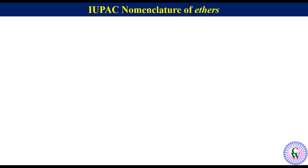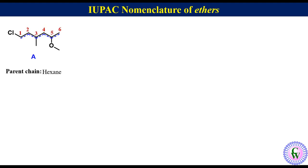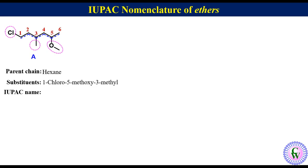A few more examples. Compound A: the parent chain is a six-carbon chain called hexane, numbered one through six. There are three substituents: a chloro at C1, a methyl at C3, and a methoxy at C5. Written in alphabetical order: 1-chloro, 5-methoxy, 3-methyl. Thus the IUPAC name of this molecule will be 1-chloro-5-methoxy-3-methylhexane.